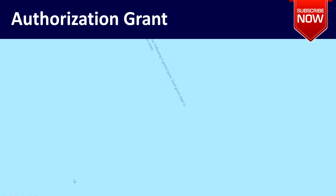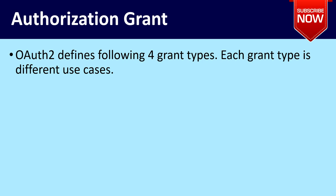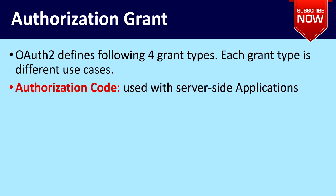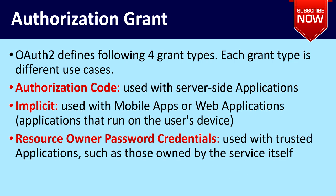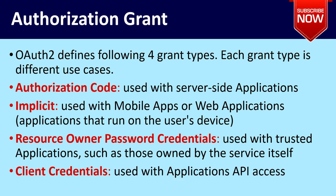Authorization grant. OAuth2 defines the following four grant types, each used for different use cases: authorization code, used with server-side applications; implicit, used for mobile apps or web applications that run on the user's device; resource owner password credentials, used with trusted applications such as those owned by the service itself; and client credentials, used with application API access.